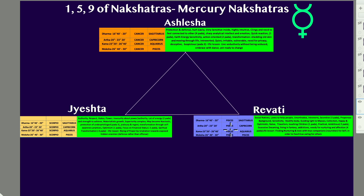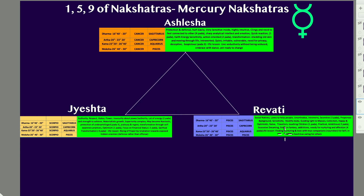In Revati in Pisces, it becomes all about letting go. These are social natives who want to help people — once again the people theme of Mercury nakshatras plays out, very attached to and concerned about people. They come from a prosperous background, have a healthy body, and love teaching children — the children theme of Mercury plays out. They have a need for finding nurturing love with true companions. Ashlesha needs a companion; Revati is searching for a true companion because it has faced so much deception moving from Jyeshtha through Mula to Uttara Bhadrapada — so much karmic life lesson. In Revati it searches for the true companion.